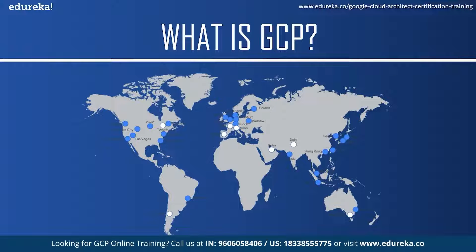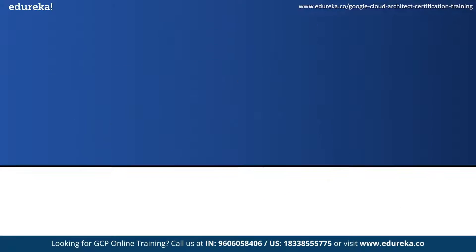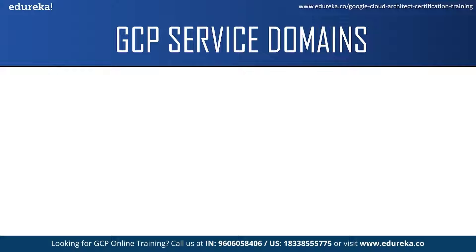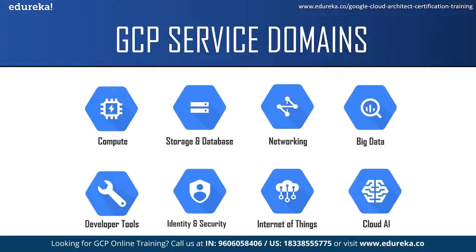A region is a specific geographical location where you can host your resources, and a region can have three or more zones. Google Cloud Platform provides various services in different domains. The first is Cloud Compute Engine, where we can create instances of virtual machines on GCP. Second is storage and database — GCP offers highly durable, available, and scalable storage solutions. Next is the networking service, which provides fast, reliable, and secure networking that scales based on user demands. Next is big data.